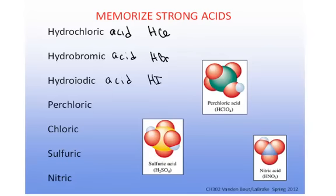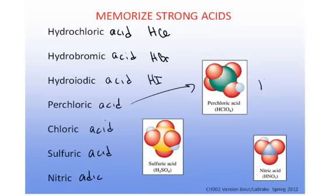The oxy acids that you need to memorize that are strong acids are perchloric acid, chloric acid, sulfuric acid, and nitric acid. Perchloric acid has the formula HClO4. The green is the chlorine, the red is the four oxygens, and the white is the hydrogen. The hydrogen is bound to the oxygen — a common feature in oxy acids, where hydrogen is bound to an oxygen, which in turn is bound to a non-metal. Chloric acid is similar to perchloric acid but has only three oxygens.